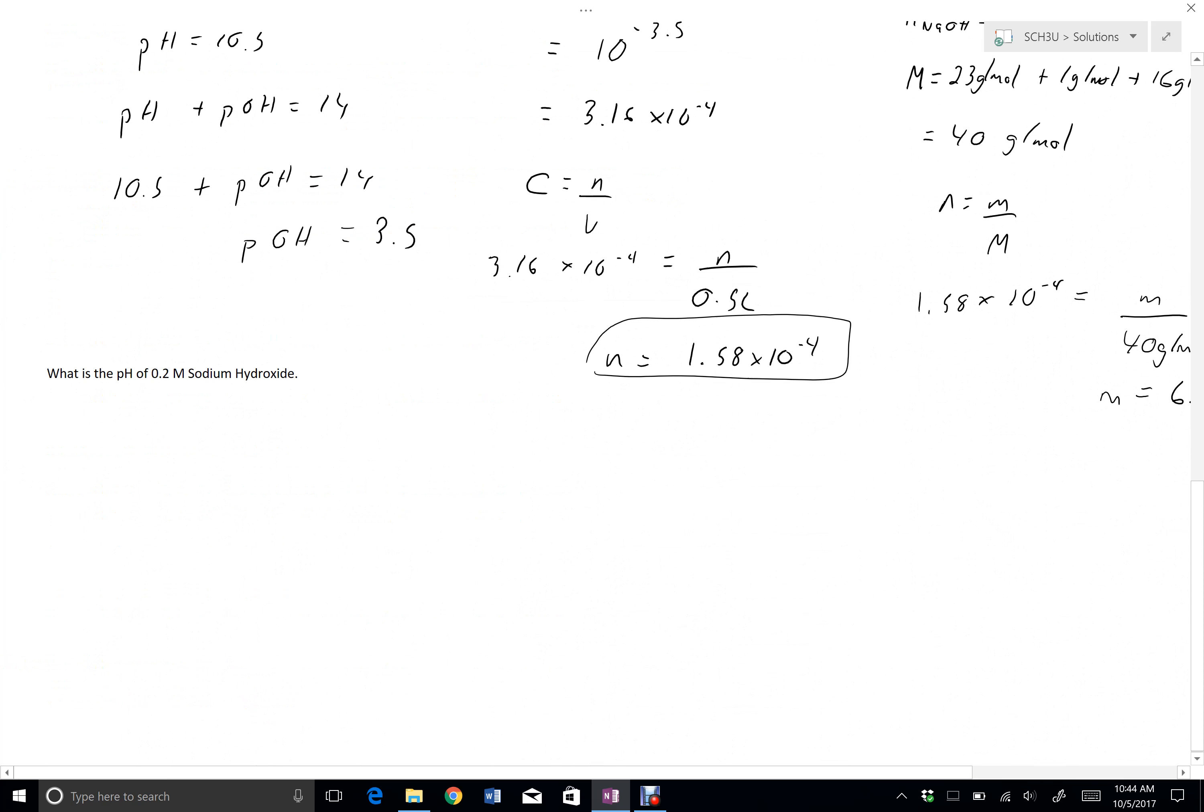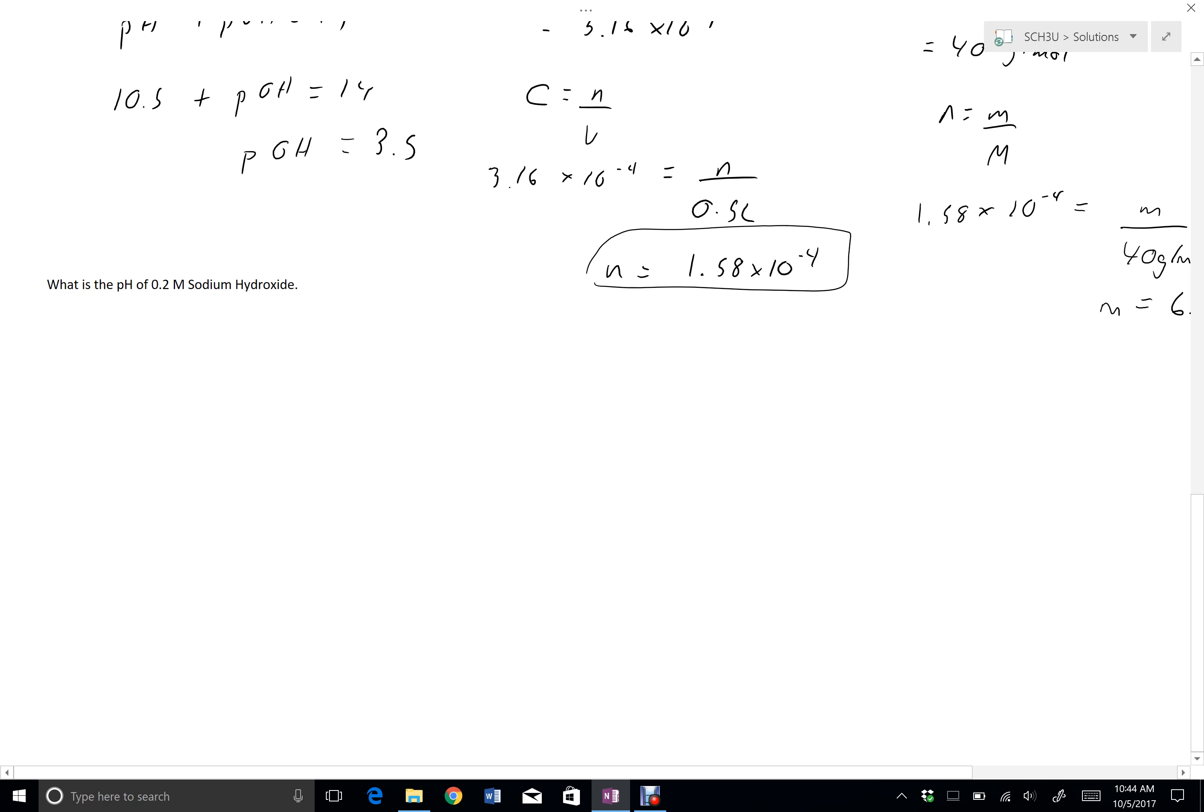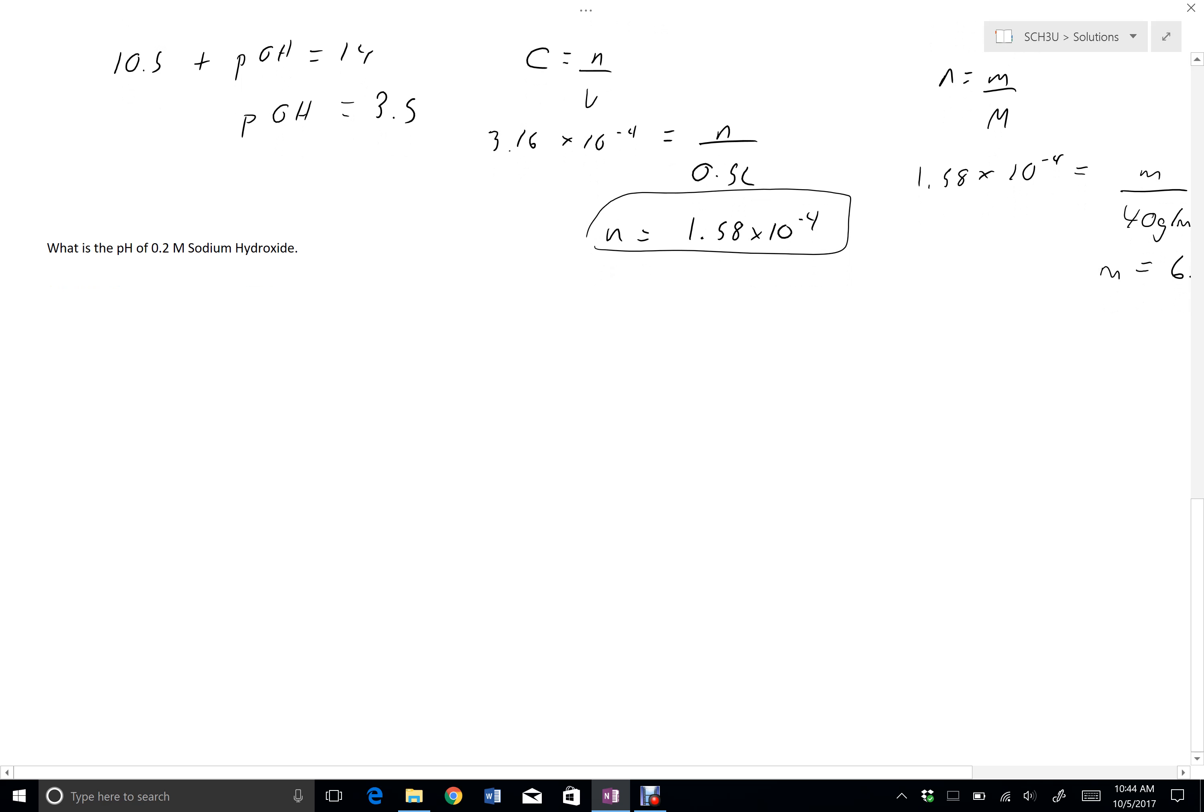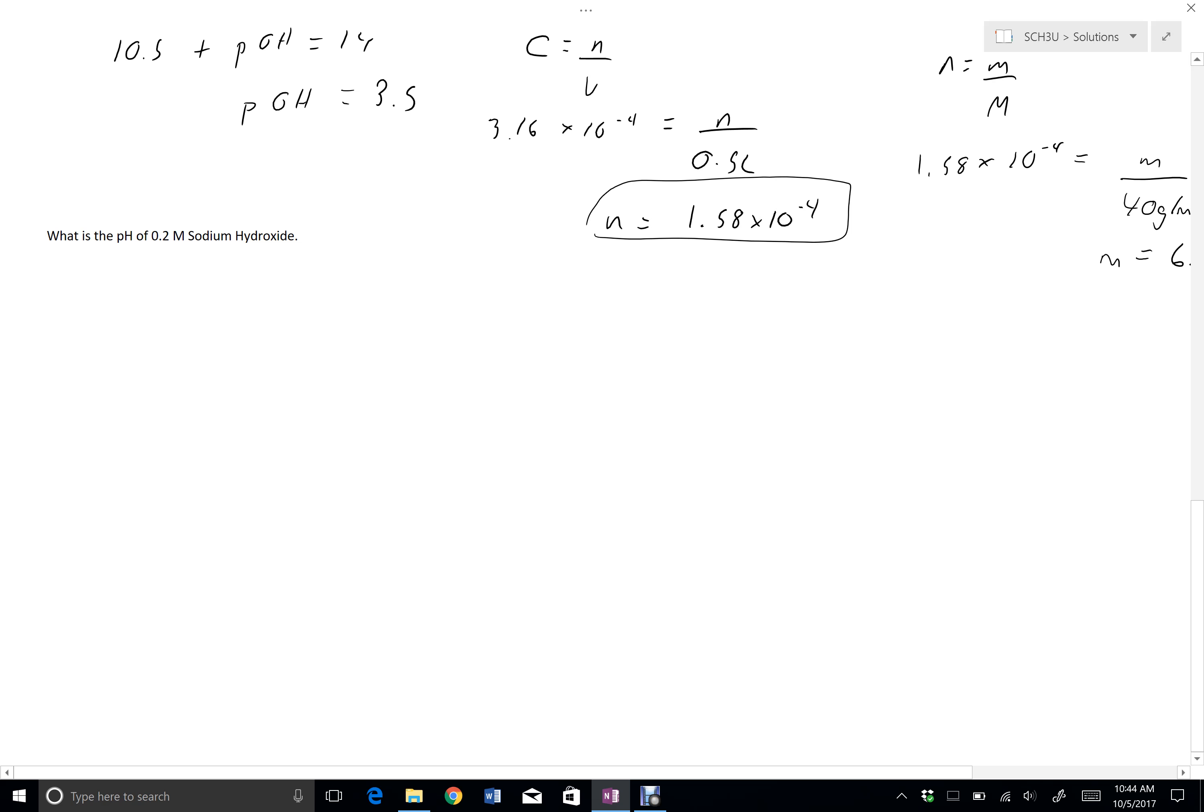We'll do one more here where we work the other way. We'll have a pH. What is the pH of 0.2 molar sodium hydroxide? We have a concentration of our base here and we'll work our way over to the pH.